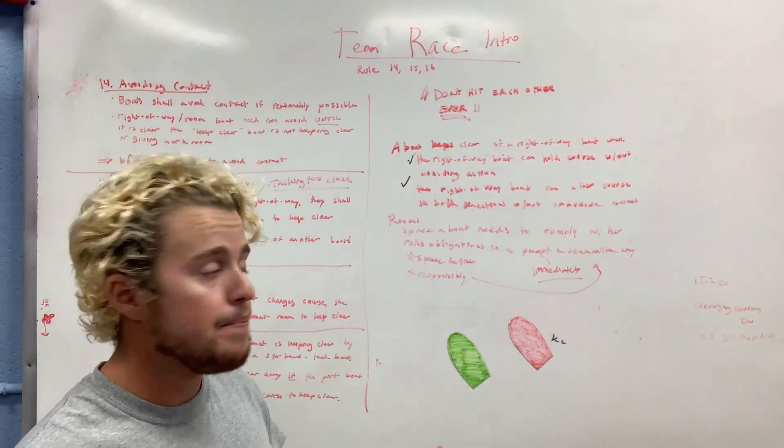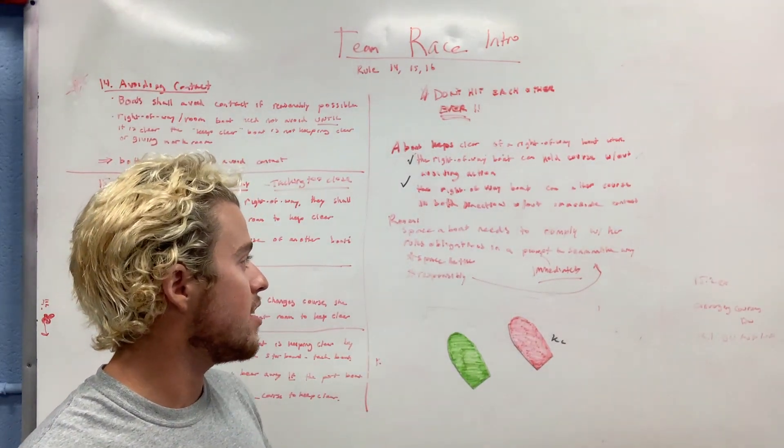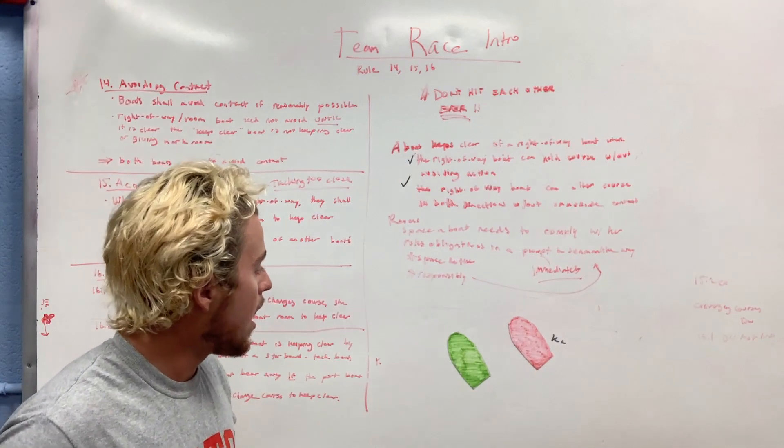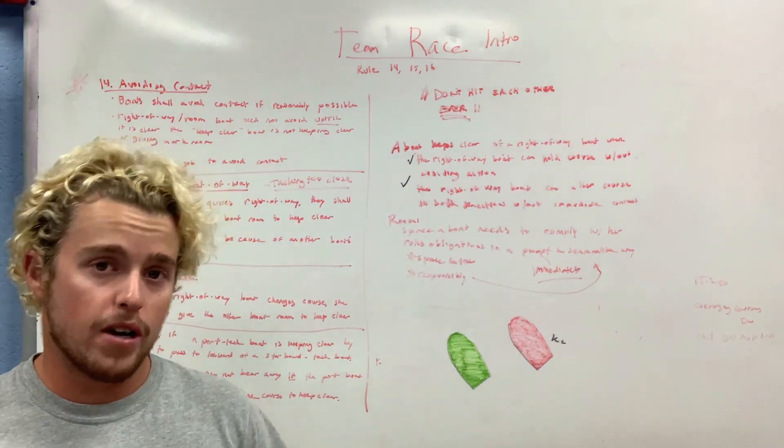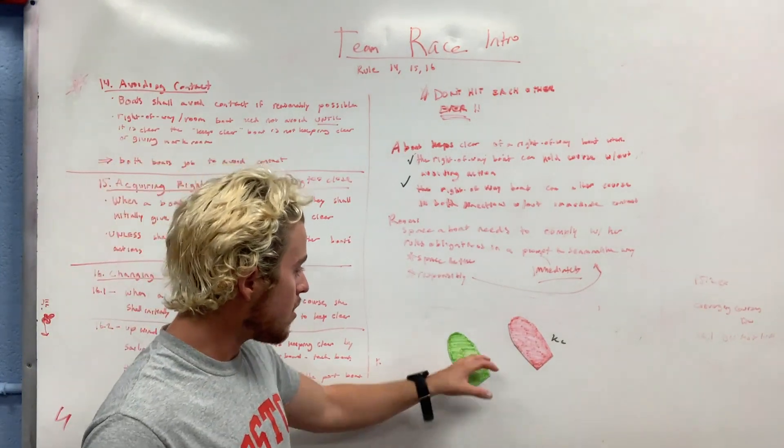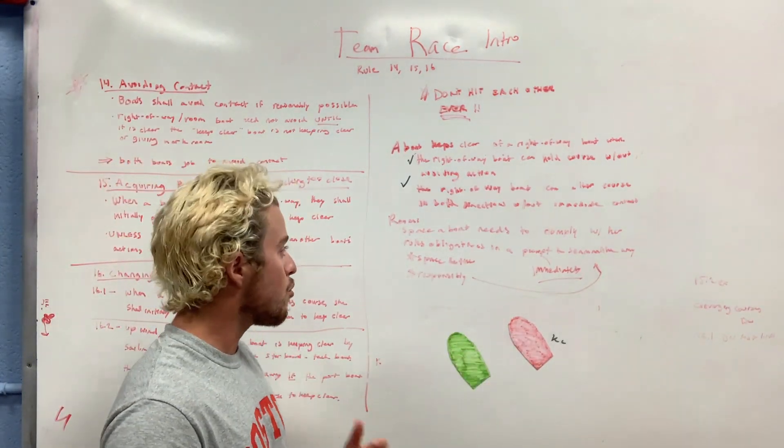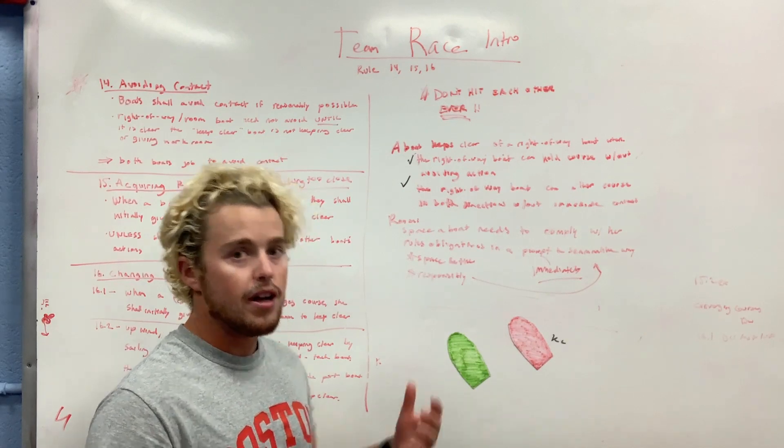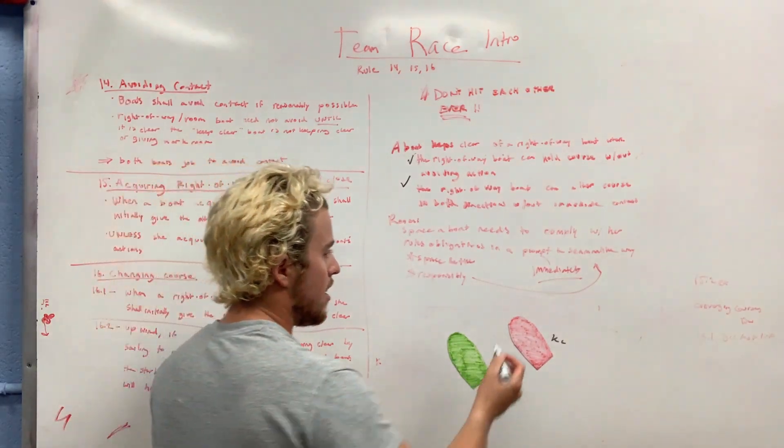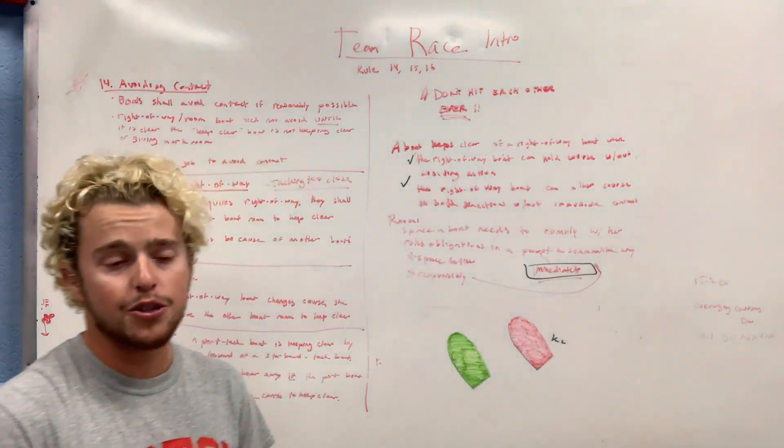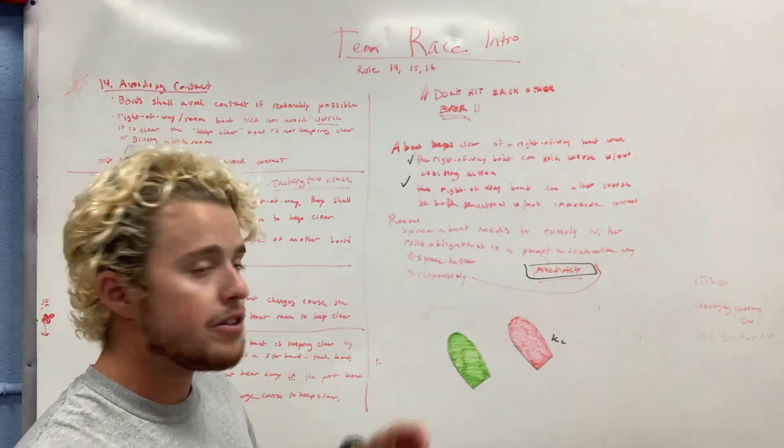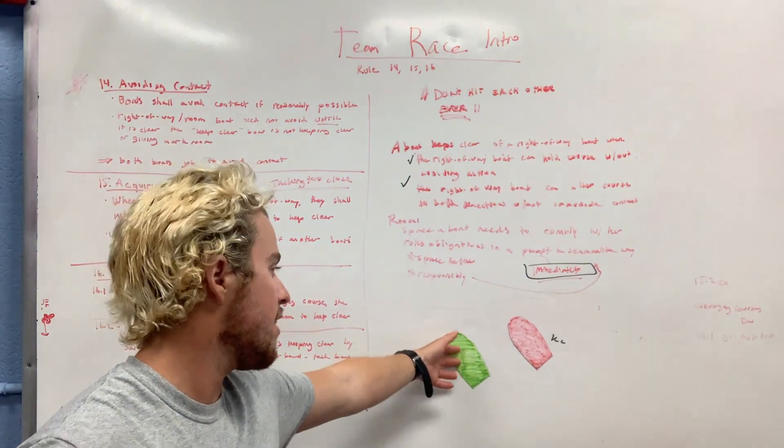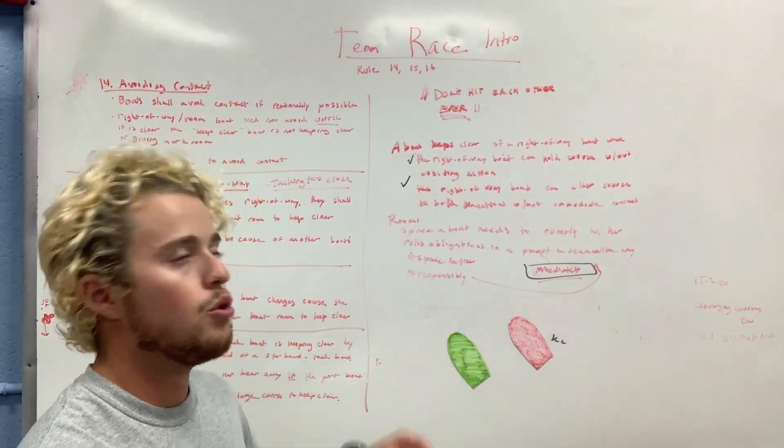Room is the space and time that a boat needs to comply with the rules obligations in an immediate and responsible way, prompt and seamanlike way. When we change course, the right-of-way boat always needs to give the keep clear boat room to avoid them immediately, and the keep clear boat needs to avoid the right-of-way boat immediately. This immediately thing is really important.